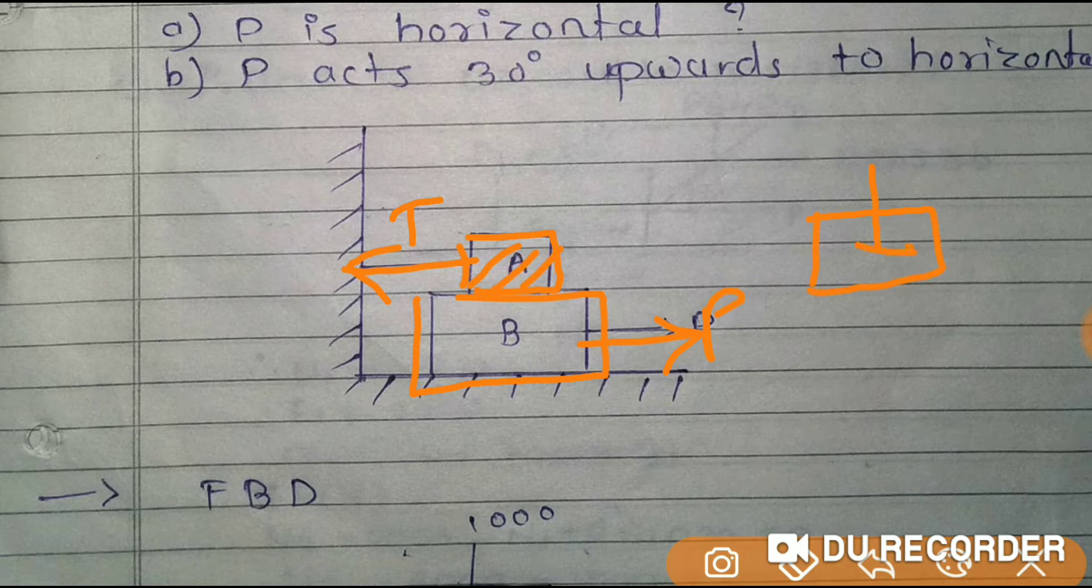Starting with block A. Weight 1000 will be vertically downward. Tension will be in the opposite direction. If weight is 1000, there will be equal and opposite normal force N1. Tension T is here, so friction will be in the opposite direction, that is F1.